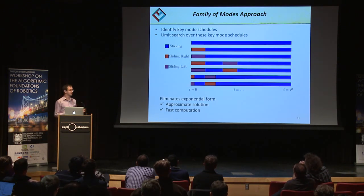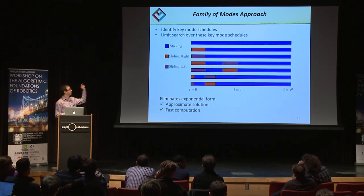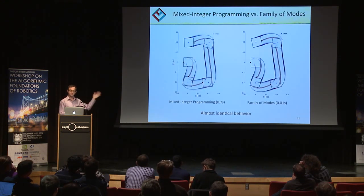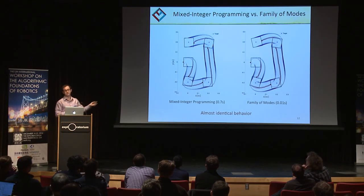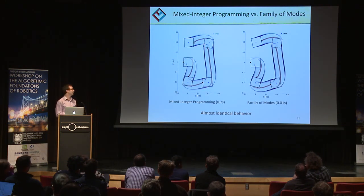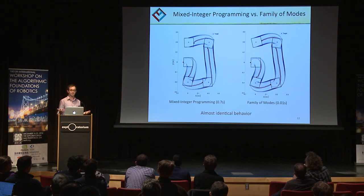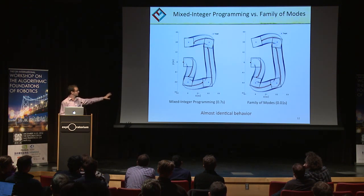If you limit the search over those modes, this eliminates the combinatorial form. It would be an approximate solution, but it enables very fast computation, as within each mode this is just a quadratic program. The key result was that MIQP, which solves 3^N quadratic programs, compared to family of modes solved using only three modes, gives almost identical behavior. This is really surprising. Because you're replanning at 100 Hz, if you pick your modes smartly enough to represent the dynamics of the system, you'll always go in the right direction. And implementing the family of modes, you can solve it fast enough on the real robot, around 100 Hz.